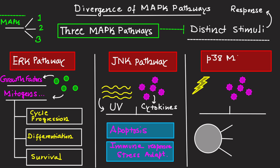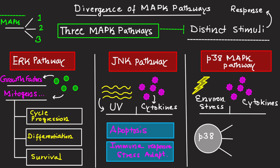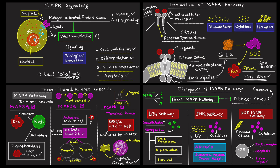The third pathway is the P38 MAP Kinase Pathway, which is activated by environmental stress as well as inflammatory cytokines. This pathway, where the P38 molecule is involved, mediates inflammation, regulates apoptosis, and manages tissue repair mechanisms. That covers the basics of the MAP Kinase Pathway, including the introduction, the initiation, the three-tiered kinase cascade, and the divergence into the ERK, JNK, and P38 pathways.